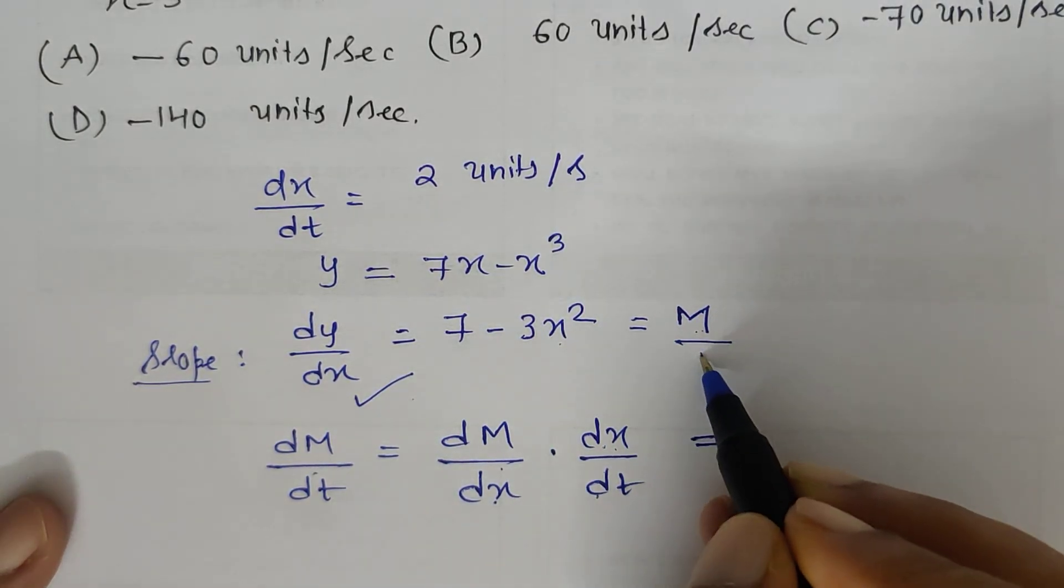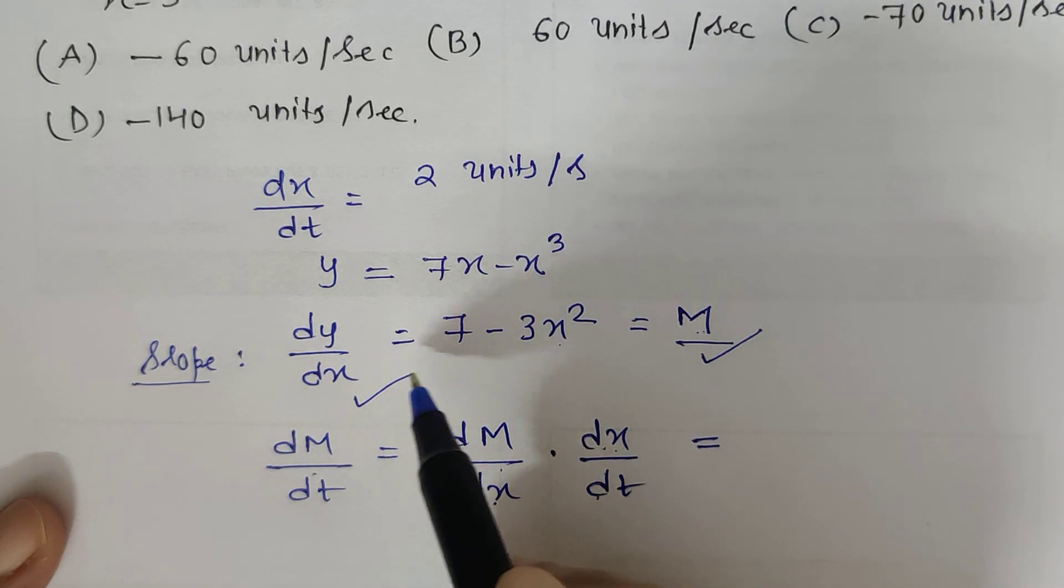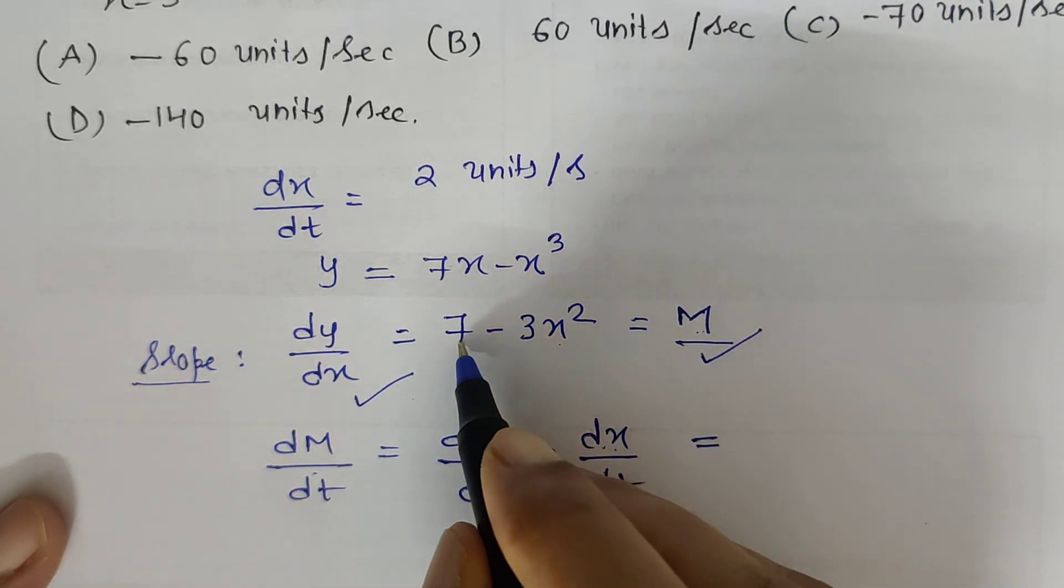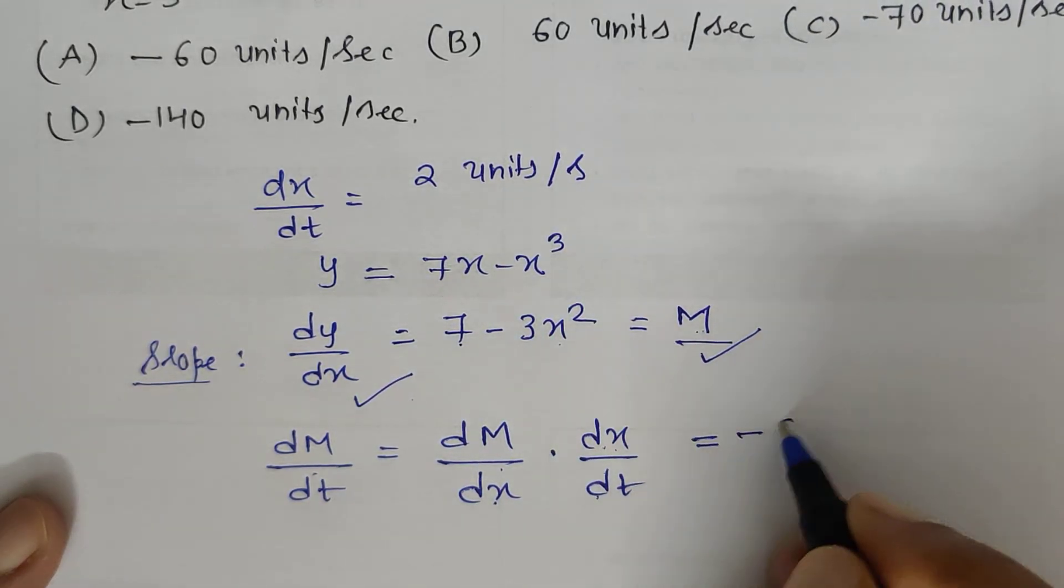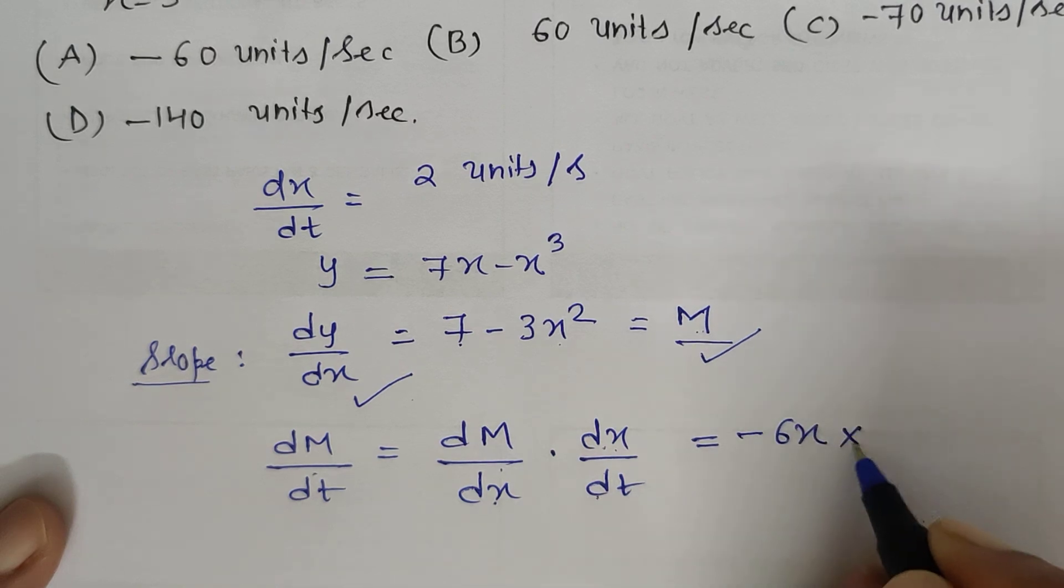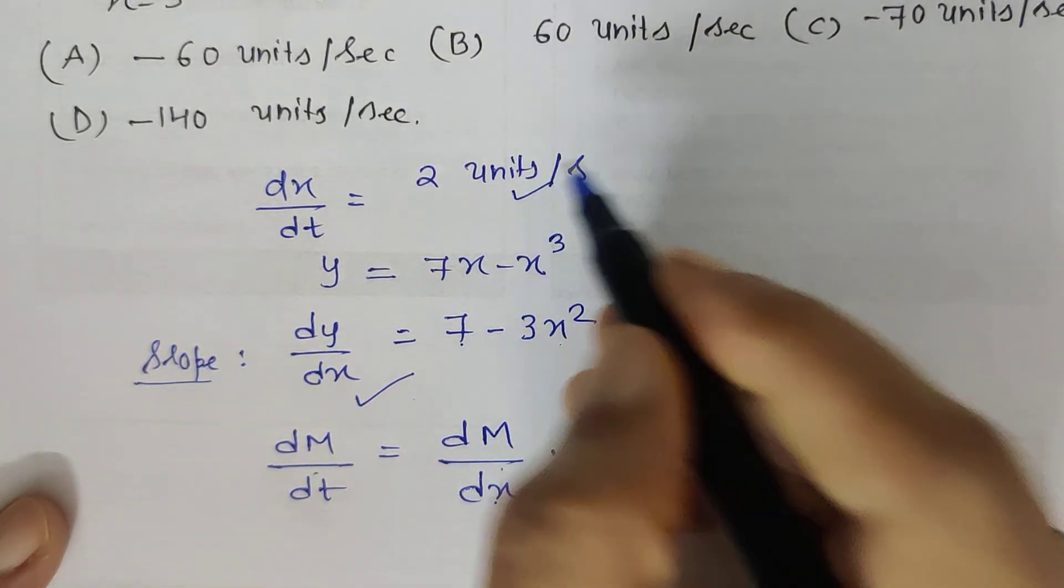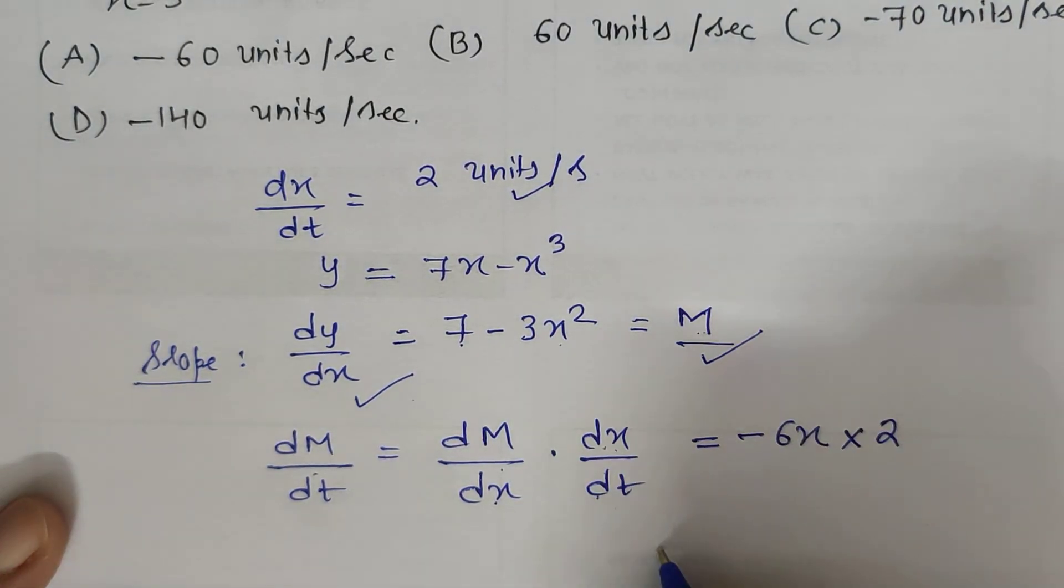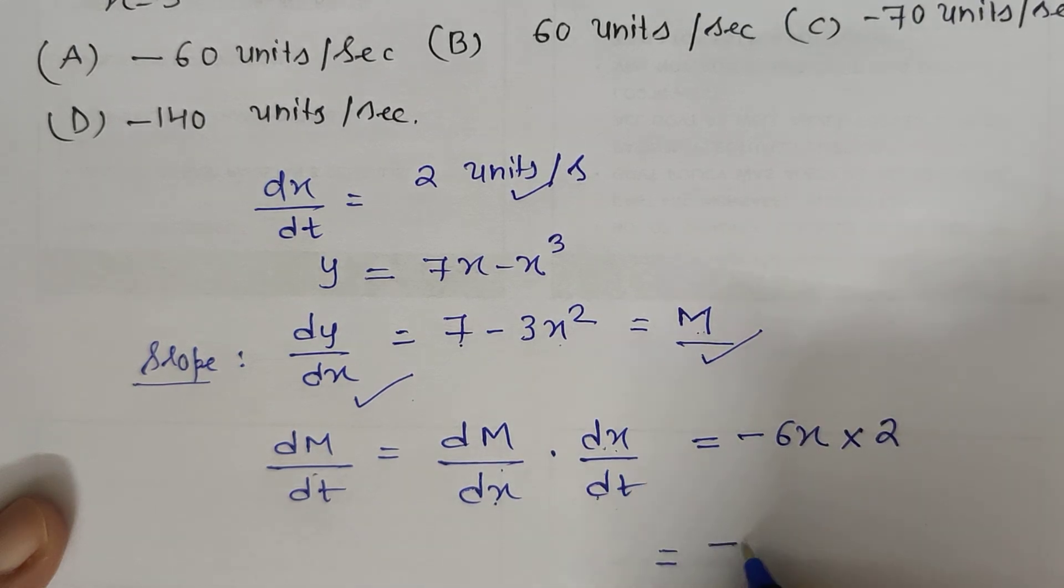What does it mean? I have to re-differentiate the slope. So 7 is constant, derivative is 0. This is -3x², derivative is -6x. Multiplying by dx/dt which is 2, I get -6x × 2, which gives us -12x.